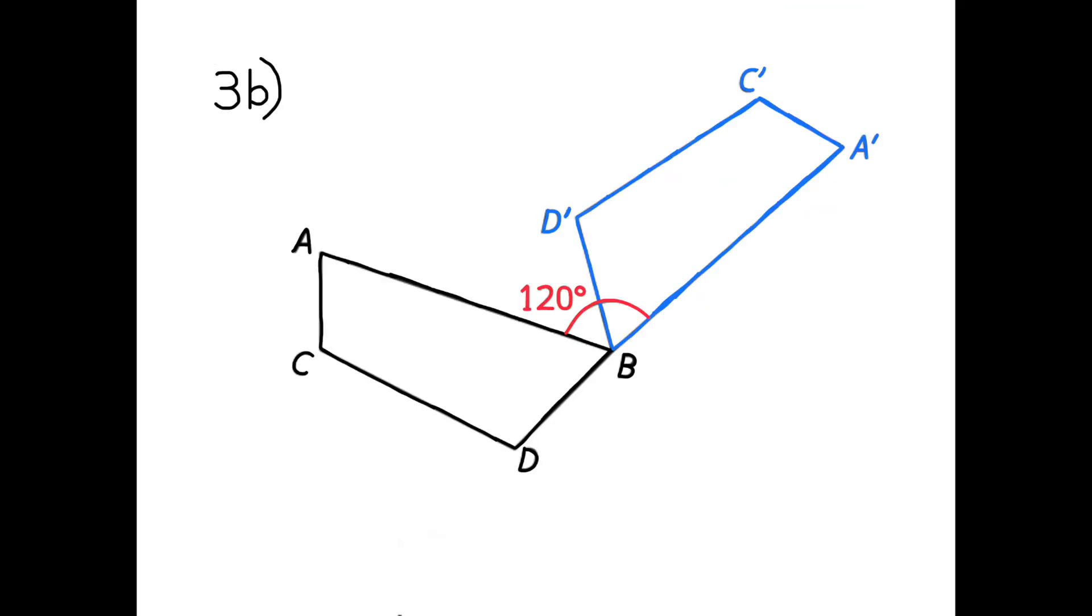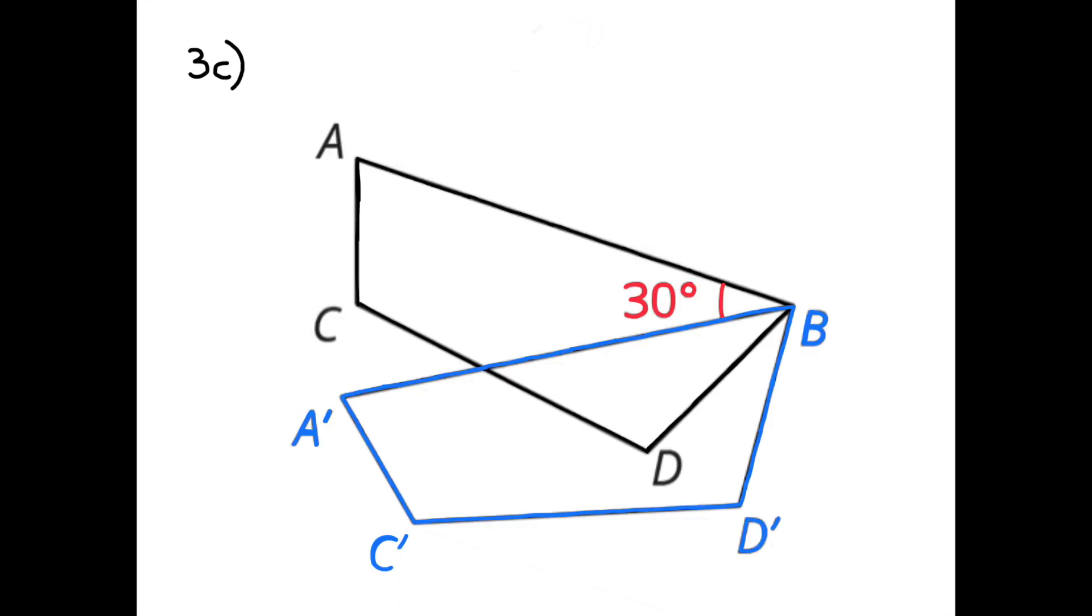B. 120 degrees clockwise. Here's a look at 120 degree rotation using B as the center. C. 30 degrees counterclockwise. Here's a look at the quadrilateral after a 30 degree counterclockwise rotation.